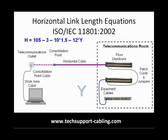Y is the ratio of the consolidation point cable insertion loss to fixed horizontal cable insertion loss. Here we've decided to use a single-ended Category 6 patch cable, so Y will be 1.5 again. So now we just have to do the math.